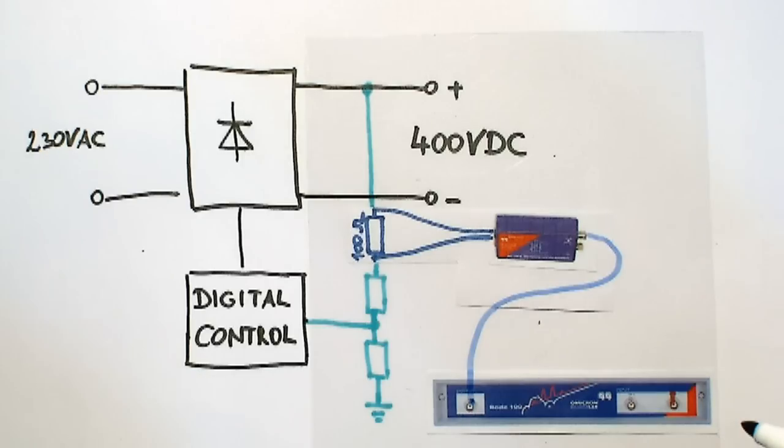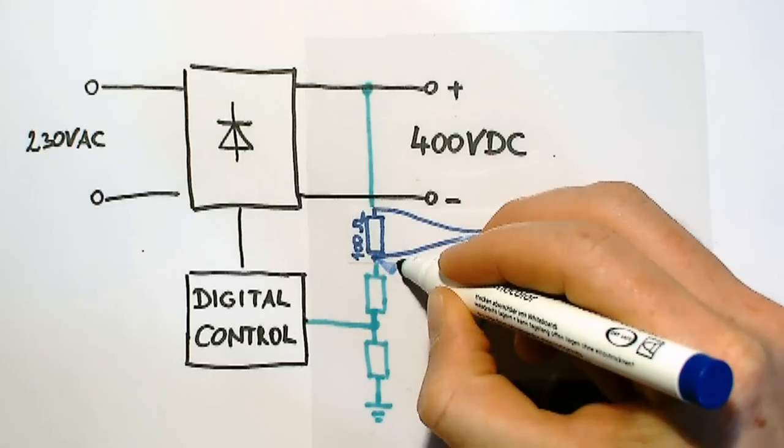The inputs channel 1 and channel 2 of the Bode 100 are then connected on both sides of the resistor using high voltage differential probes.